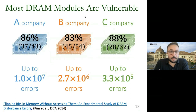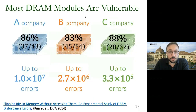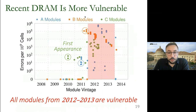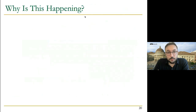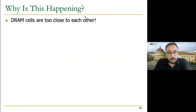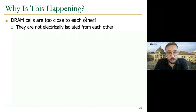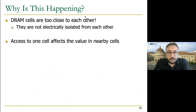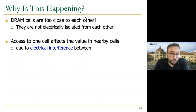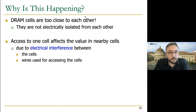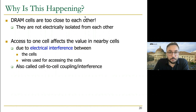In this study, we tested many DRAM modules from three major manufacturers and observed that most of them are vulnerable to RowHammer. All modules from 2012 and later are vulnerable. When we investigate why this is happening, we see that DRAM cells are too close to each other and are no longer electrically isolated from each other, so accessing one cell affects the value in nearby cells due to electrical interference between cells and coupling between two cells.